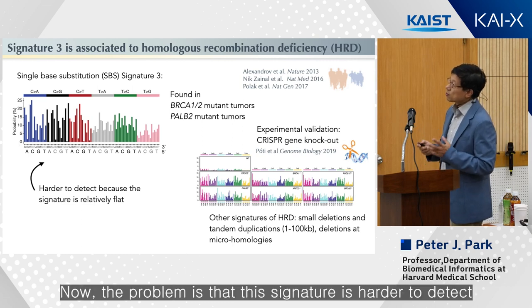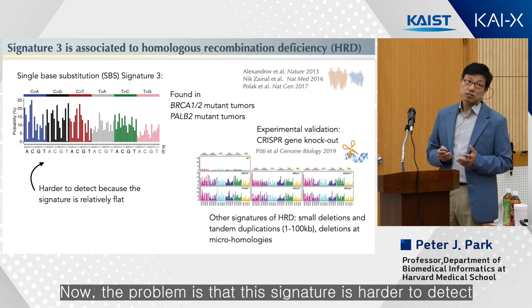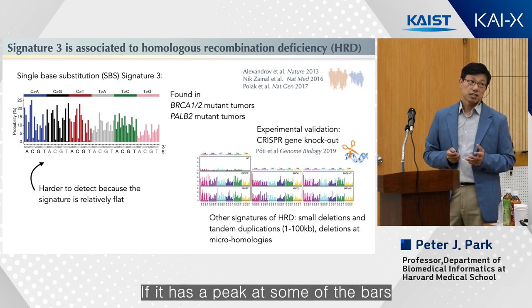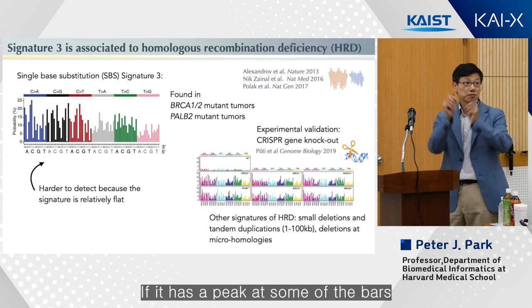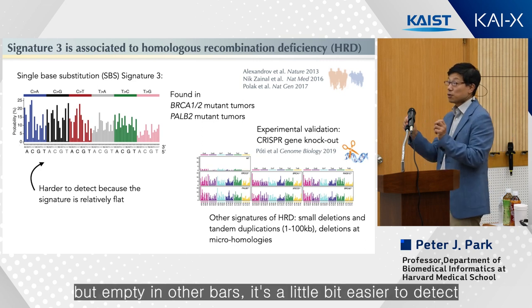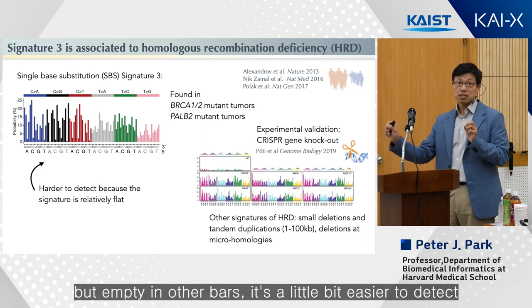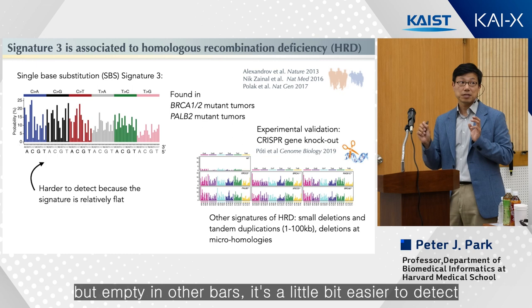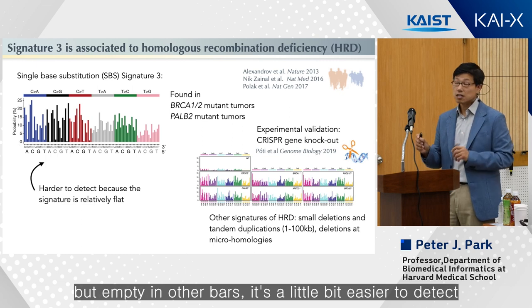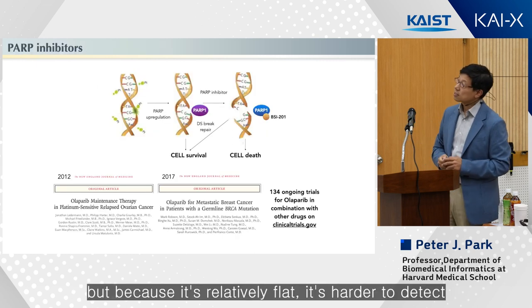The problem is that Signature 3 is harder to detect. If a signature has peaks at some bars and is empty at others, it's a little easier to detect. But because Signature 3 is relatively flat across the 96 dimensions, it's harder to detect.